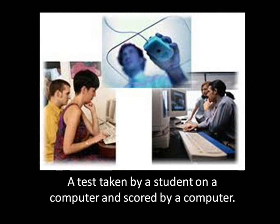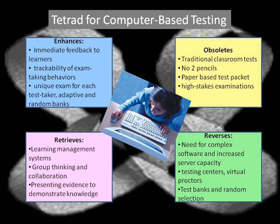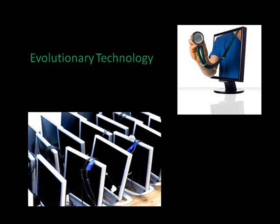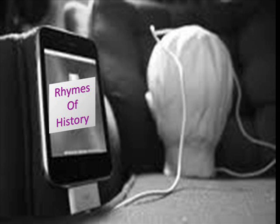It has been replaced by computer-based testing. According to the Office of the Department of Education, computer-based testing is a test taken by a student on a computer and scored by the computer. Here is a Tetrad for computer-based testing as an emerging technology. It enhances the trackability of testing behaviors, thus making traditional paper and pencil testing obsolete. It makes testing centers and virtual proctors needed, and retrieves the idea of collaboration and demonstrating evidence of knowledge. We can see how Thornburg's forces explain the emergence of this technology. The evolutionary force is the progression of existing technologies to a new one — the Scantron form used a machine to grade the learner's responses, and computer-based testing progresses to a machine that administers the examination as well.